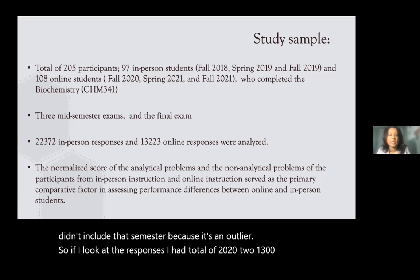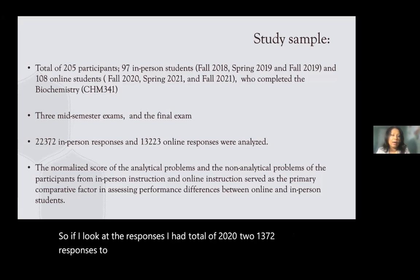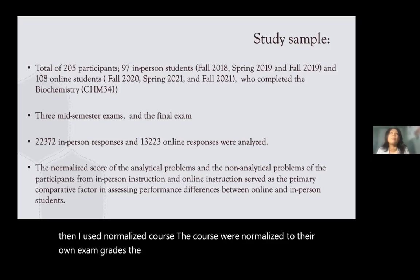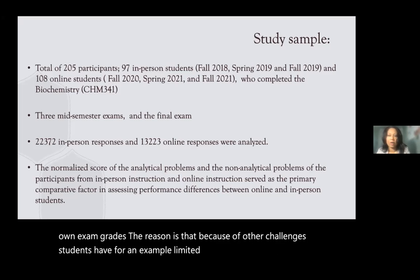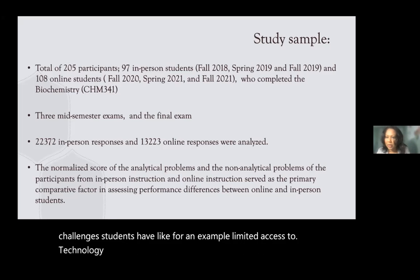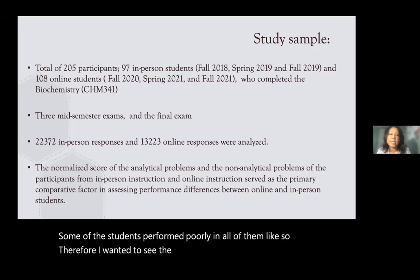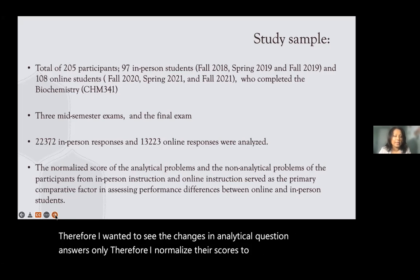There were a total of 22,372 responses to in-person questions and 13,223 online responses. Scores were normalized to each student's own exam grades. The reason is that some students performed poorly across all questions due to challenges like limited technology access, so I normalized to isolate changes in analytical question answers specifically.